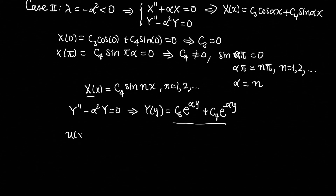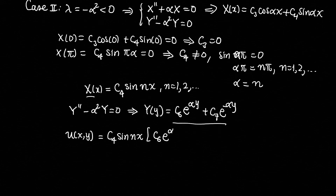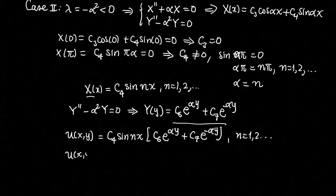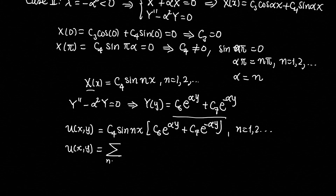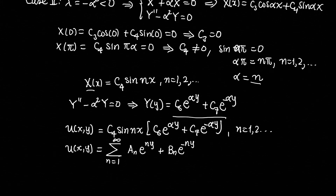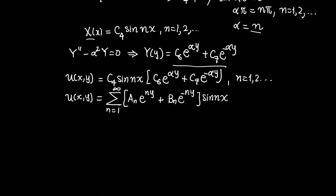Combining X and Y, we get u(x,y) = c₄·sin(nx)·(c₆·e^(ny) + c₇·e^(-ny)) for n = 1, 2, … The general solution is then u(x,y) = Σ from n=1 to ∞ of [aₙ·e^(ny) + bₙ·e^(-ny)]·sin(nx), where aₙ = c₄·c₆ and bₙ = c₄·c₇.